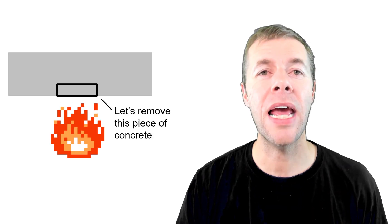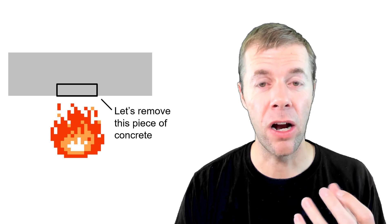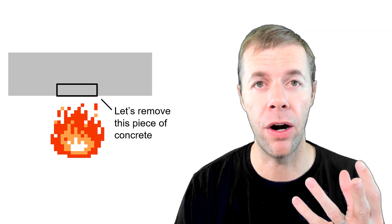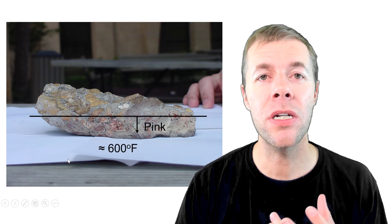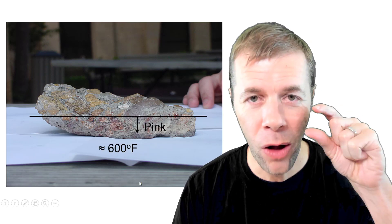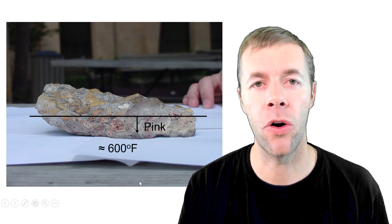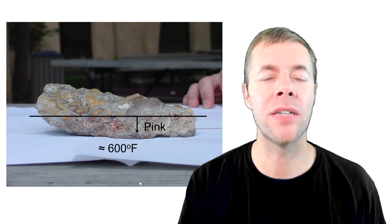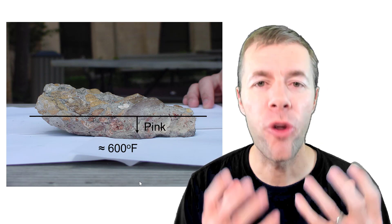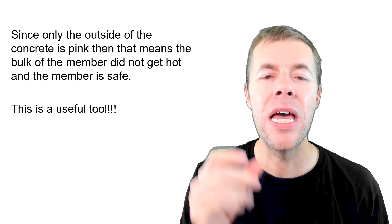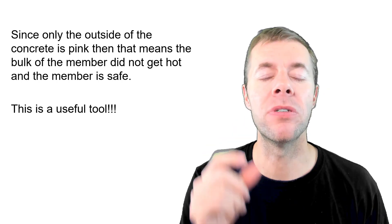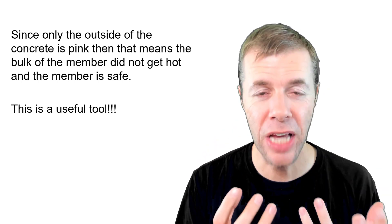So if I have a concrete slab and there's fire underneath it I could actually take a chunk out, look at that concrete, and I did that on a real structure that was on fire. And this is what it looked like. And as you can see this pink region is restricted to the outside half inch of the concrete. That means that region got to 600 degrees Fahrenheit. But the rest of it didn't. Since only the outside of the concrete's pink it means the bulk of the member did not get that hot. And so the member is safe.